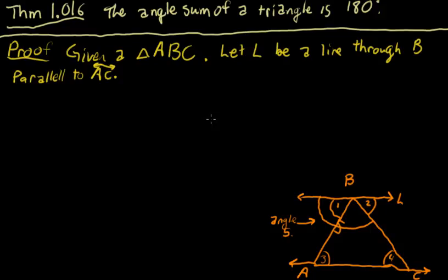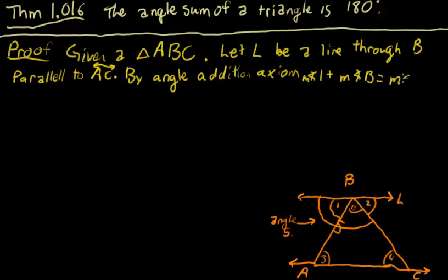We can say that by angle addition axiom, measure of angle 1 plus measure of angle B equals measure of angle 5.